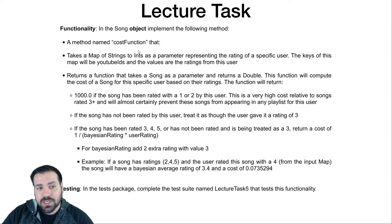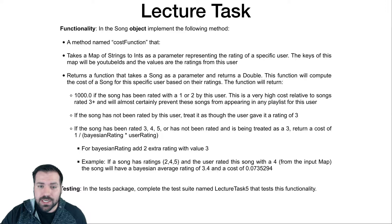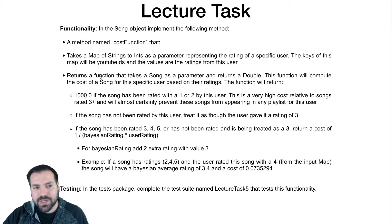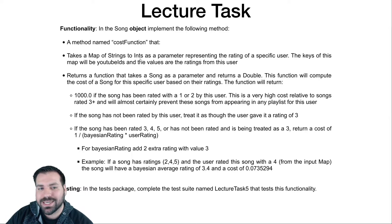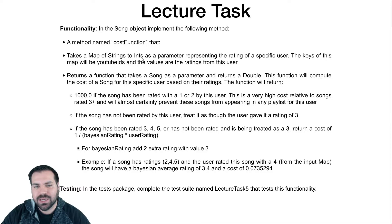This cost function is going to be the return value of a method. In the song object, you're going to write a method named cost function that returns a function that takes a song and returns a double. What this takes as a parameter is a map of strings to ints representing the ratings for a specific user. We're going to find the best song according to that particular user — mapping YouTube IDs to integer ratings.